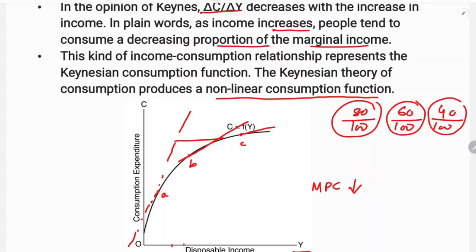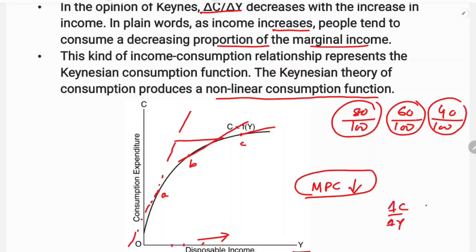The slope of the consumption function — that is, the marginal propensity to consume — goes on declining according to Keynes. There is a non-linear consumption function; linear means a straight line. The marginal propensity to consume is gradually declining: delta C by delta Y is declining.